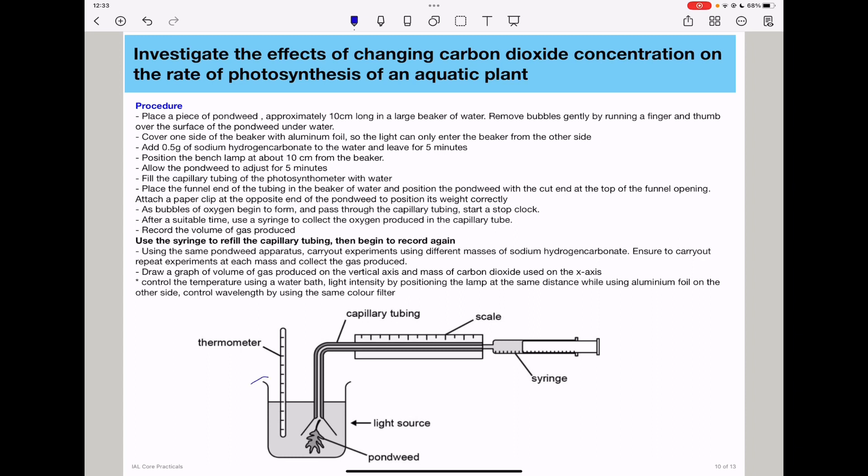During this experiment, the side of the beaker is covered with aluminum foil to ensure that light does not enter from this direction. This means light comes from only one source, and we can control the amount of light the plant is exposed to.